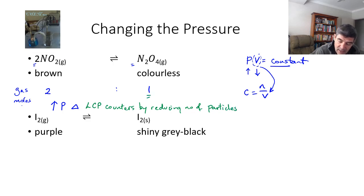In this case, the right hand side has just one particle, whereas the left hand side has two. So if we increase pressure, we're going to push this equilibrium to the right. Therefore, shift right.